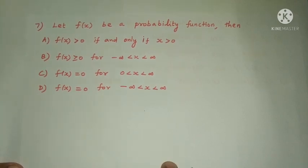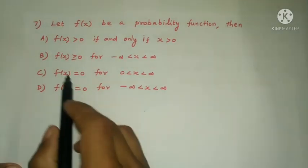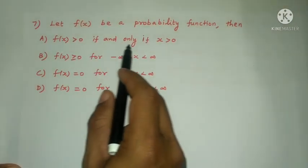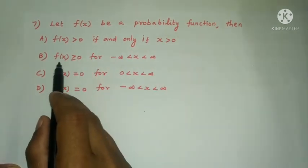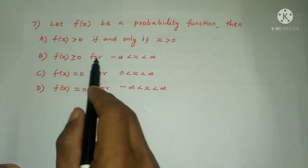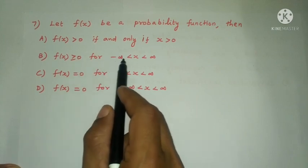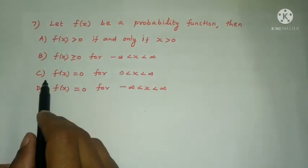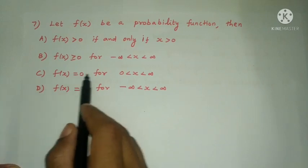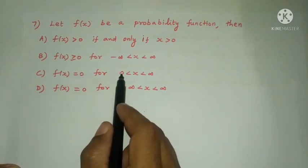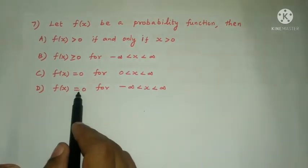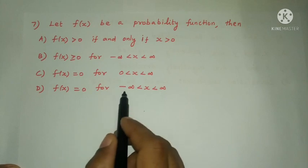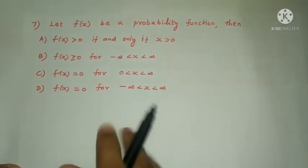Next question: Let f(x) be a probability density function. Then — Option A: f(x) > 0 only if x > 0; Option B: f(x) ≥ 0 for all -∞ < x < ∞; Option C: f(x) = 0 for 0 < x < ∞; Option D: f(x) = 0 for -∞ < x < ∞. The correct property is Option B: f(x) ≥ 0 for all x.